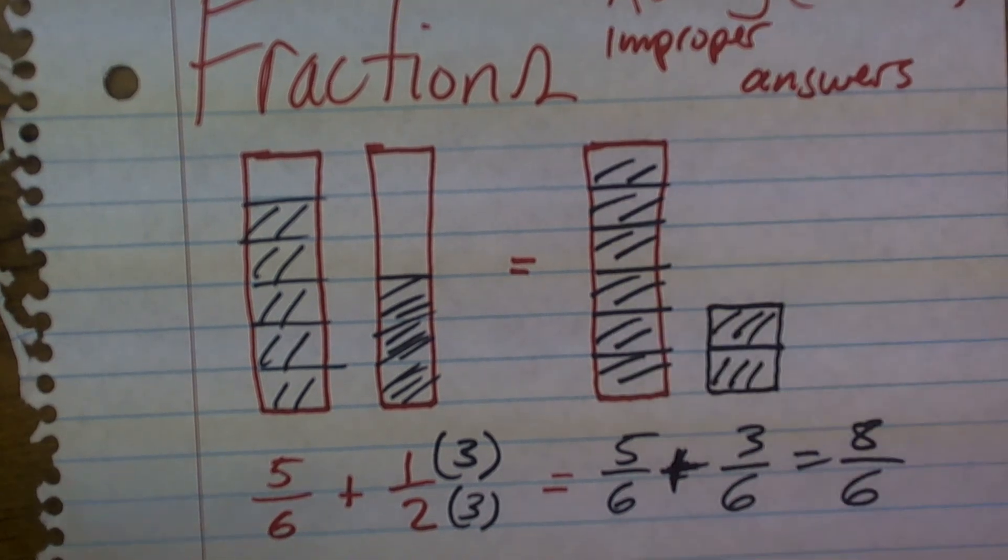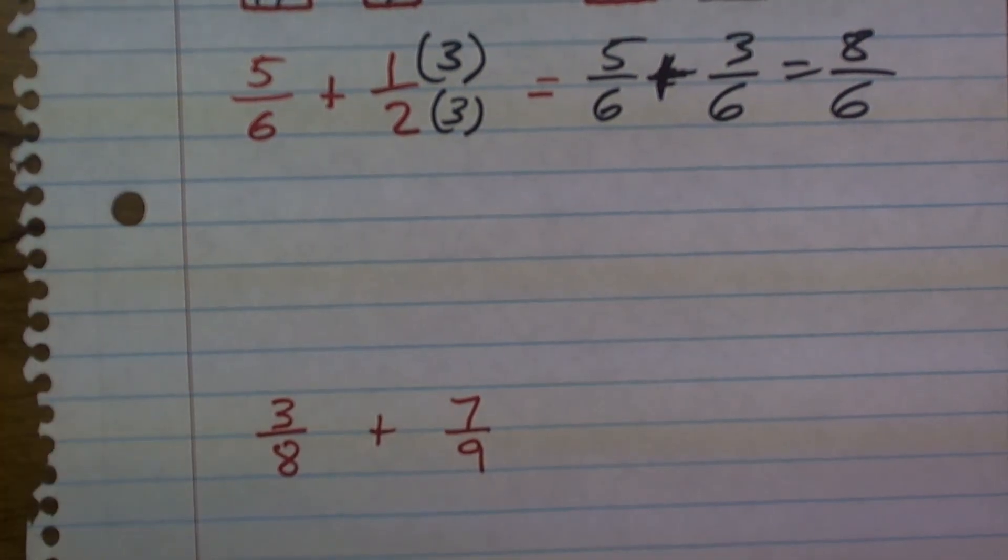I just want you to notice that you're improper because you have more parts than one whole. So let's look at another example, and I'll try to quickly go through this one: 3/8 plus 7/9.